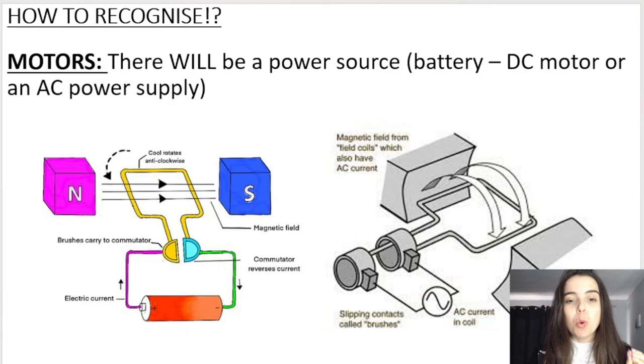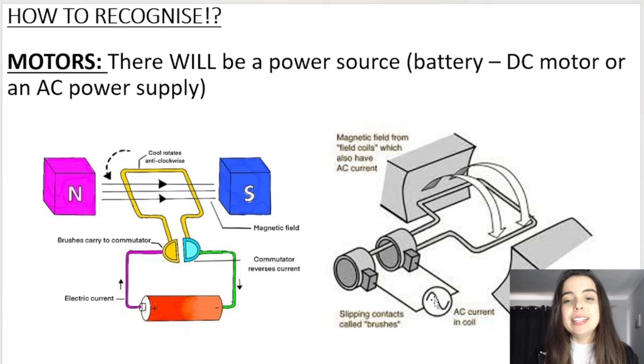Motors, on the other hand, do have a power source. So for a DC motor it will be a battery as you can see over here. For an AC motor it will be an AC power source, as illustrated by the little sinusoidal wave, the sine wave over here.